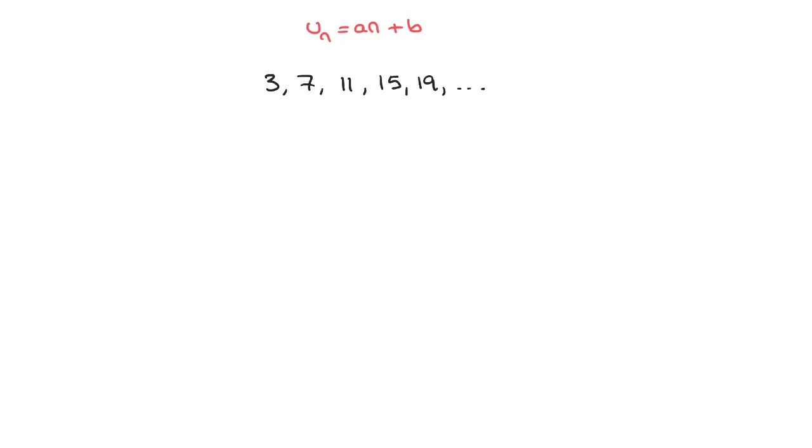Now when we're faced with a sequence of numbers, the first thing we should always do is look at the differences between consecutive terms. Here's what I mean. We can see that from 3 to 7, we're adding 4.